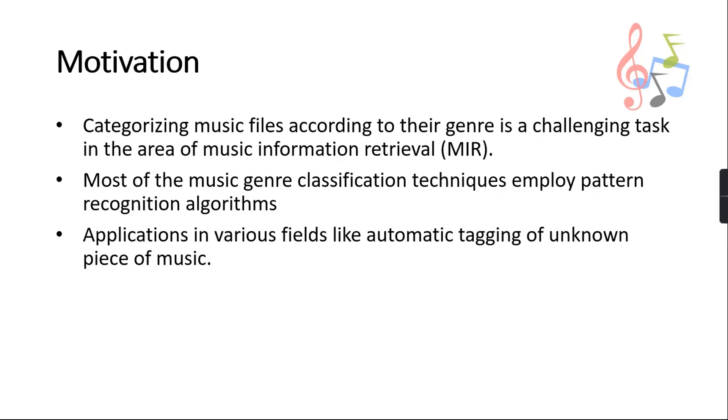Feature vectors extracted from short time recording segments into genres. Commonly used classifiers are support vector machine (SVM), nearest neighbor (NN) classifiers, etc. Automatic music genre classification is important to obtain music from a large collection. It finds application in real world in various fields like automatic tagging of unknown pieces of music and is quite useful for apps like Spotify and SoundCloud.